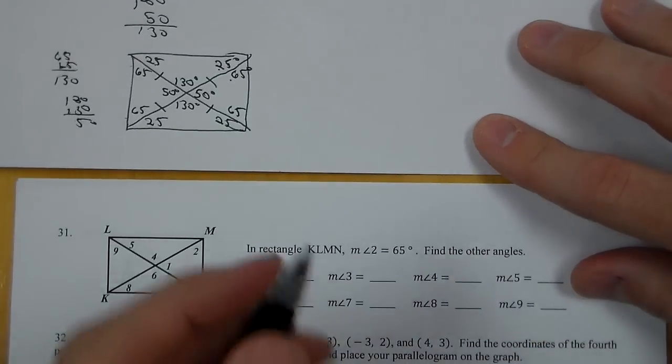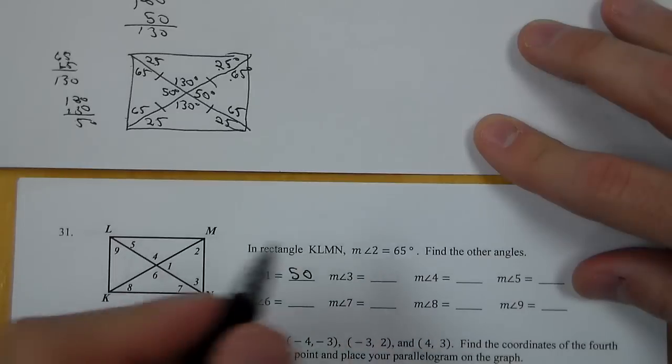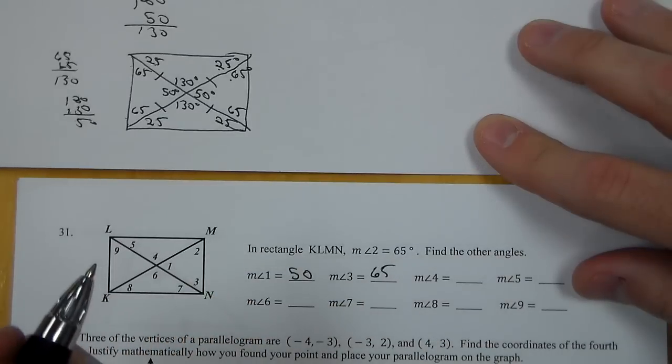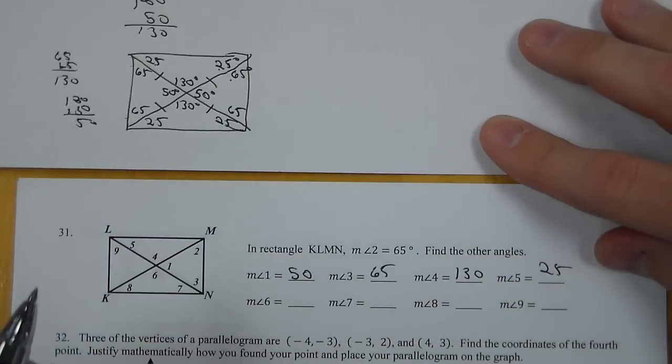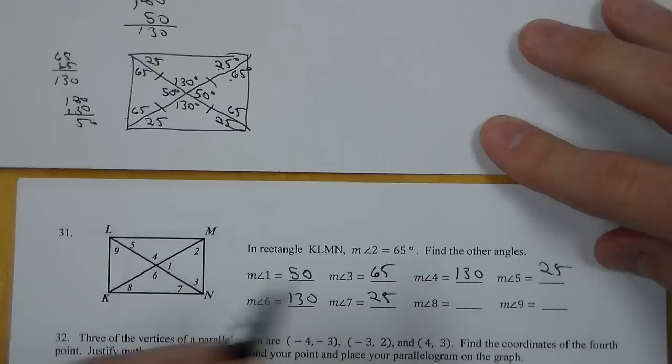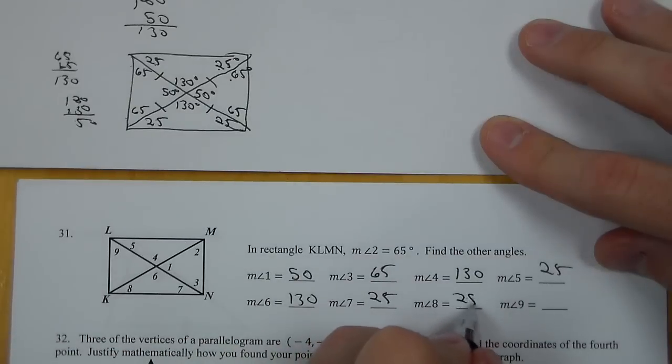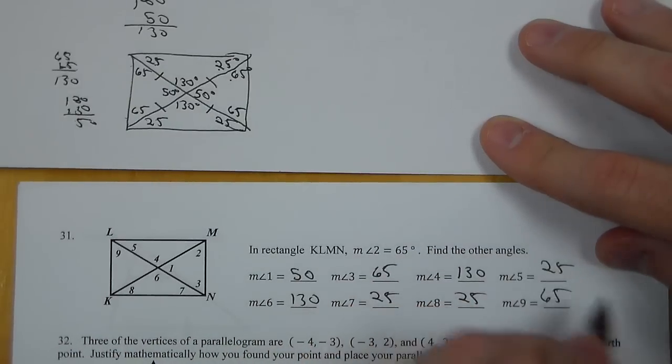So angle 1 turned out to be 50, 3 was 65, 4 was 130, 5 was 25, 6 was 130, 7 was 25, 8 was 25, and 9 was 65.